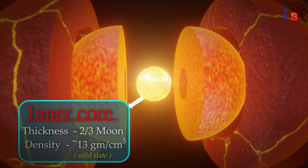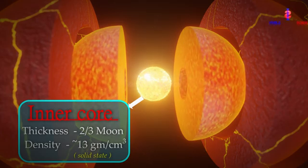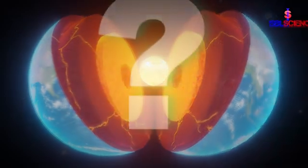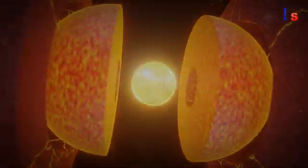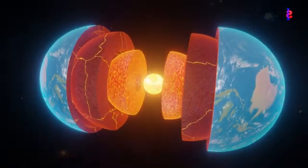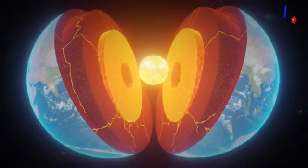The temperature of the inner core is as hot as the surface of the Sun, yet it is solid. You may be wondering why it is in a solid state while the outer core is in a liquid state, even though the temperature of the inner core is higher than the temperature of the outer core.